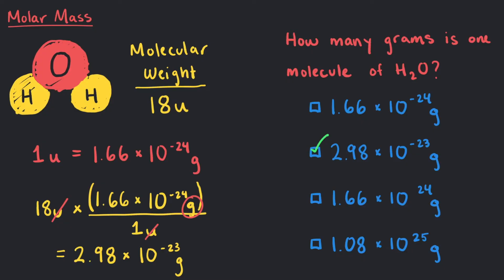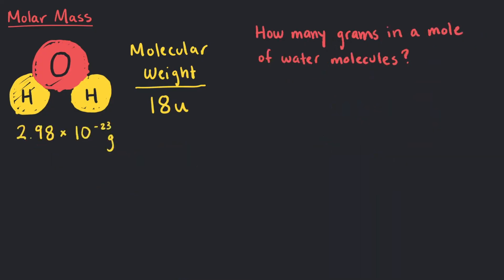If one molecule of water weighs 2.98 times 10 to the negative 23 grams, how many grams are in a mole of water molecules? Well, one mole is 6.022 times 10 to the 23 of anything. In this case, 1 mole of water molecules is a group of 6.022 times 10 to the 23 of water molecules.